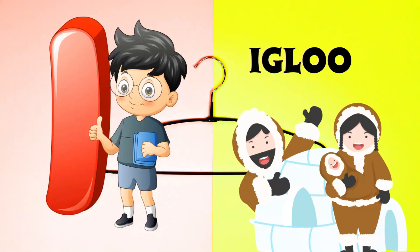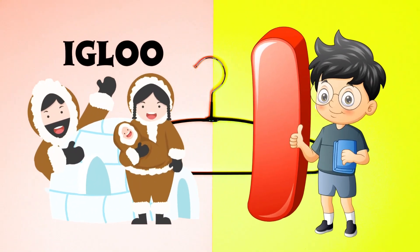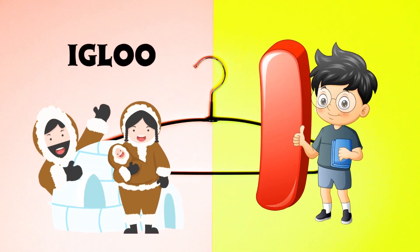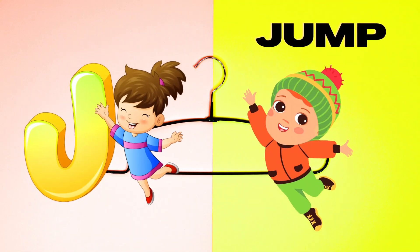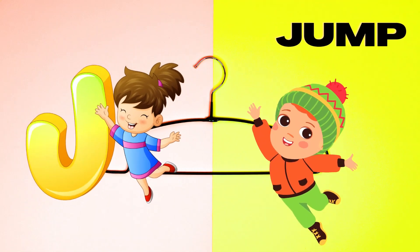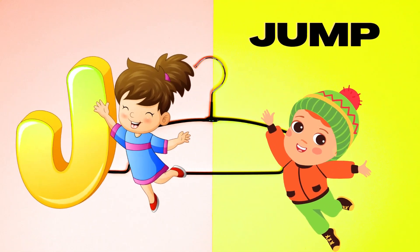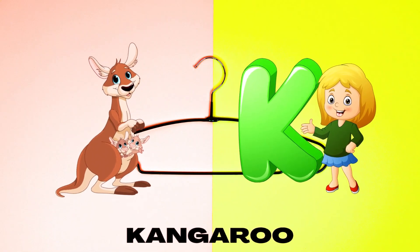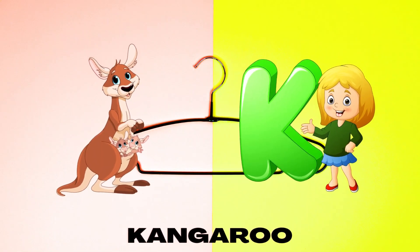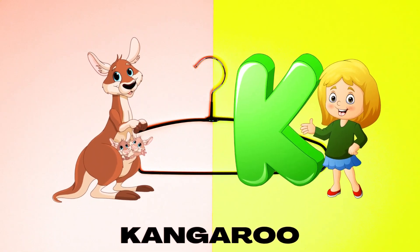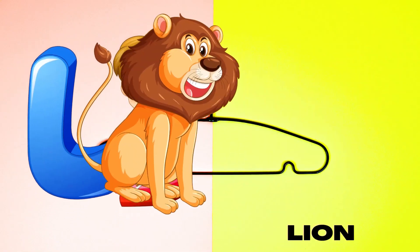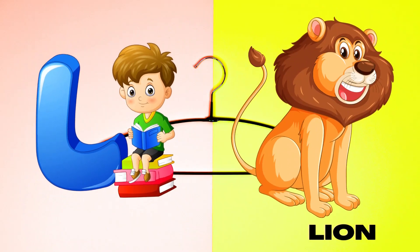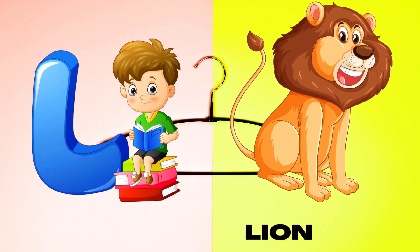I is for Igloo, I-I-Igloo. J is for Jump, J-J-Jump. K is for Kangaroo, K-K-Kangaroo. L is for Lion, L-L-Lion.